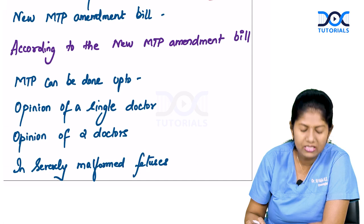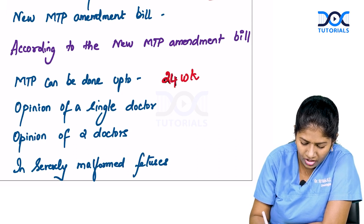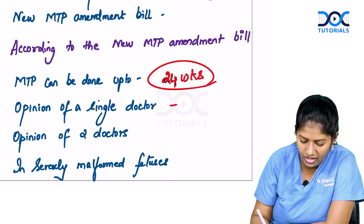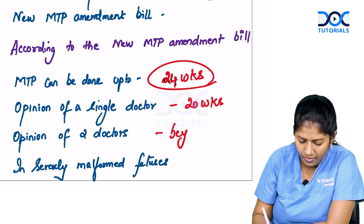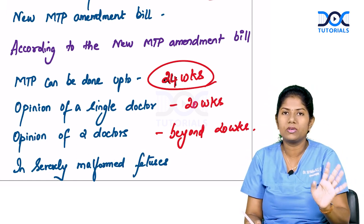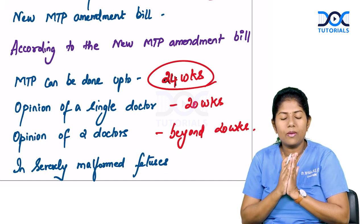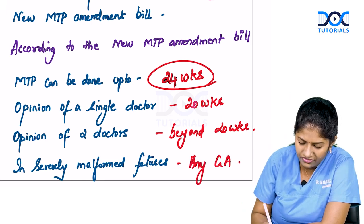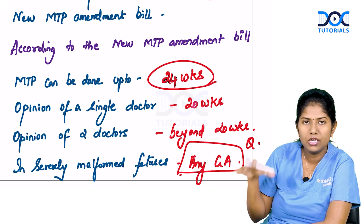The new MTP bill says MTP can be done up to 24 weeks. Under the new bill, opinion of a single doctor is enough up to 20 weeks, and beyond 20 weeks, opinion of two doctors is required. If the fetus is severely malformed — for example, anencephaly incompatible with life — then MTP can be done at any gestational age.